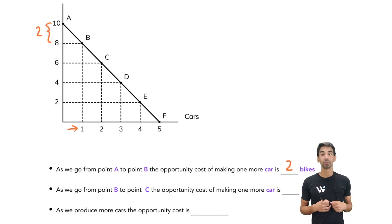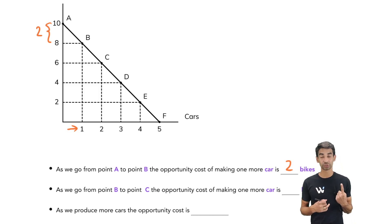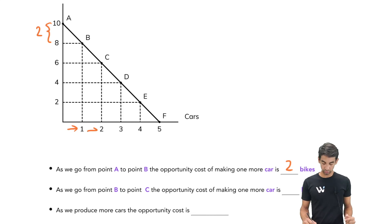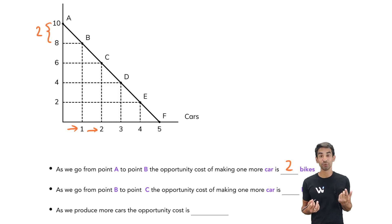In the second bullet point, it says from B to C — what is the opportunity cost? Well, from B to C we're again only making one extra car, from one to two. How many bikes do we give up? Again it's from eight to six, so that's still two.